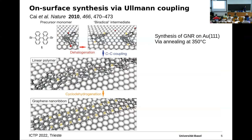We can also perform chemical reactions to build nanostructures for subsequent manipulation. A good example is on-surface synthesis with Ullmann coupling: a precursor with bromine atoms is deposited, and upon annealing the substrate the bromine is removed, leaving radical states. These react to form linear polymeric chains, and if the reaction continues, C-C bonds close and form nice graphene nanoribbons.